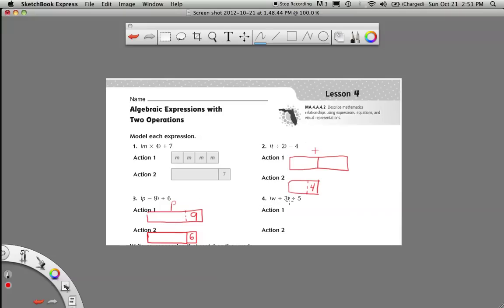We always do what's in the parentheses first. So my first action, the first thing I need to model is W plus 3. So I'm making a rectangle, labeling it W, adding on to that 3. After I did that, I would be left with a rectangle that's this big.